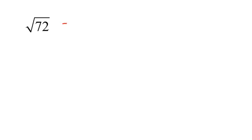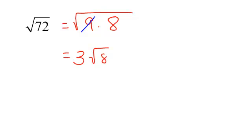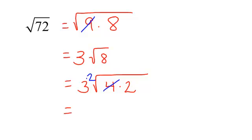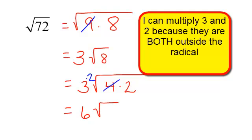The square root of 72 — let me do this a long way first. Many people think of 9 times 8, and 9 is perfect. So radical 9 comes out as 3, leaving radical 8. But I'm not done — radical 8 can be broken into radical 4 times 2. 4 is perfect of 2, so it comes out. Now 3 and 2 are both outside the radical, so I can multiply them: 6 radical 2.